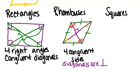So those diagonals cut the angles in half. Now the last special type of parallelogram is called a square. And I'm sure you've been hearing about squares for a long time. A square has four right angles just like a rectangle, and it also has four congruent sides like a rhombus. So it's basically a combination of both rectangles and rhombuses.